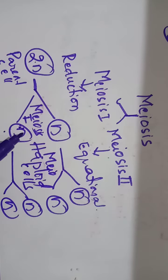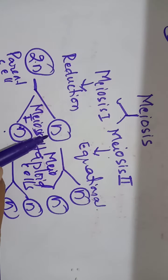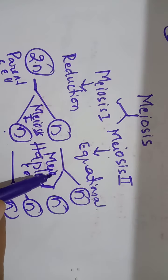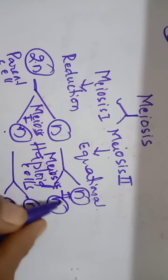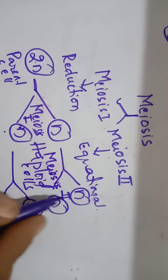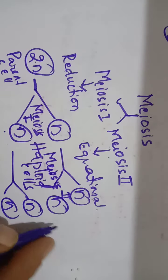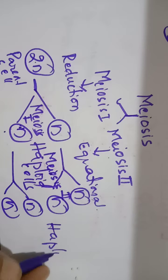In meiosis 2, each of the newly formed daughter cells again divides meiotically. Here it is dividing through meiosis 2. Through meiosis 2, it will be divided to give rise to two more haploid daughter cells.